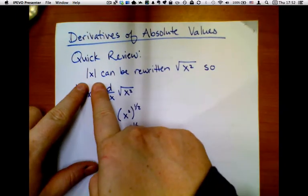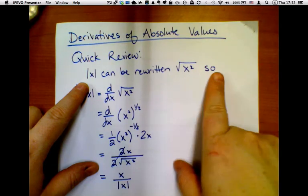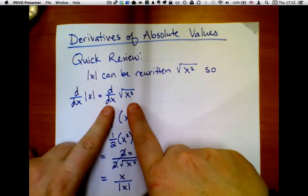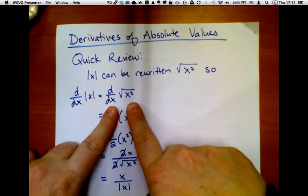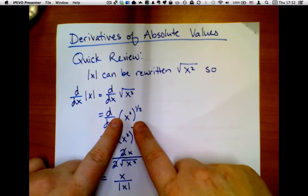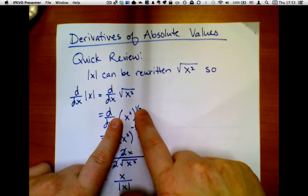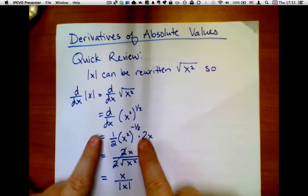The absolute value of x can be rewritten as the square root of x squared, and so the derivative of the absolute value of x can be rewritten as the derivative of the square root of x squared. And we're going to rewrite the square root of x squared as x squared to the one-half, but we're not going to combine these exponents because that would defeat the purpose. Instead, we're going to use the chain rule.